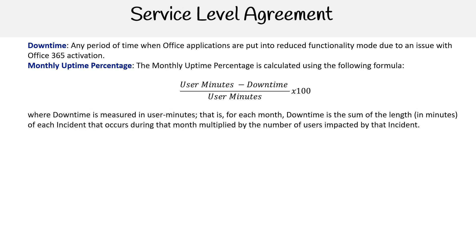Where downtime is measured in user minutes. For each month, downtime is the sum of the length of each incident that occurs during that month, multiplied by the number of users impacted by that incident.